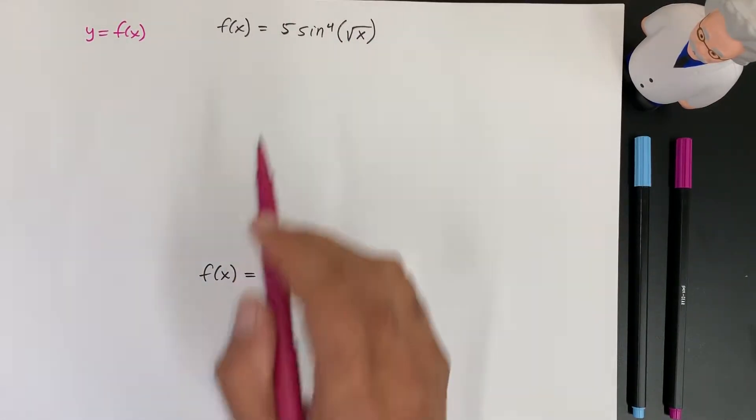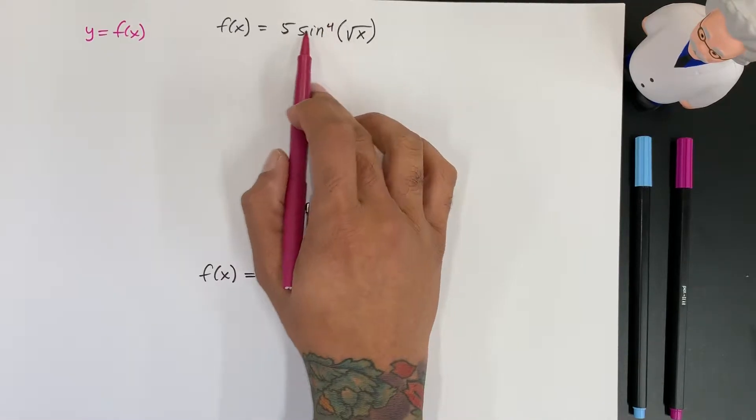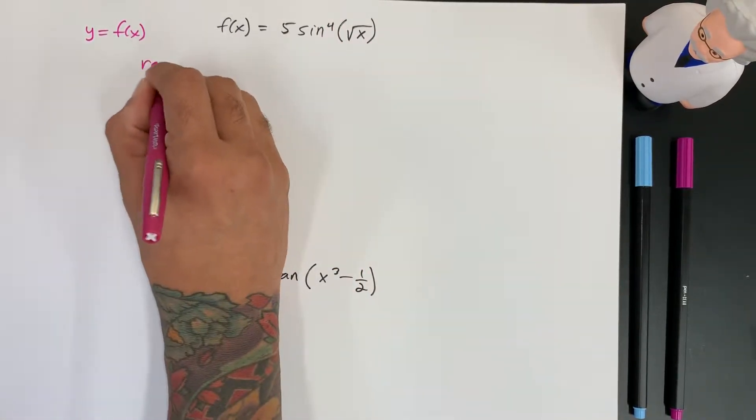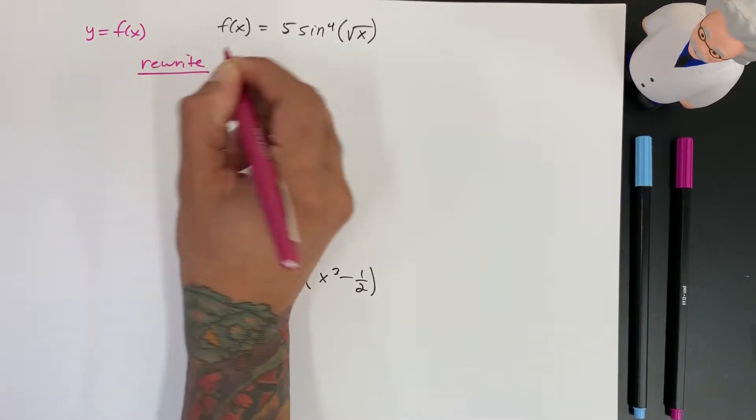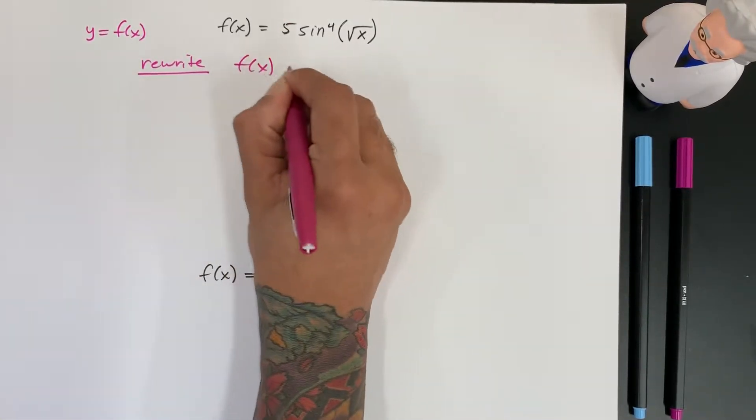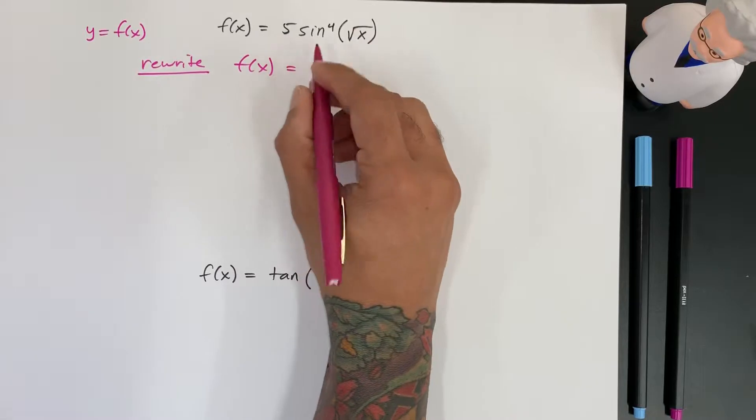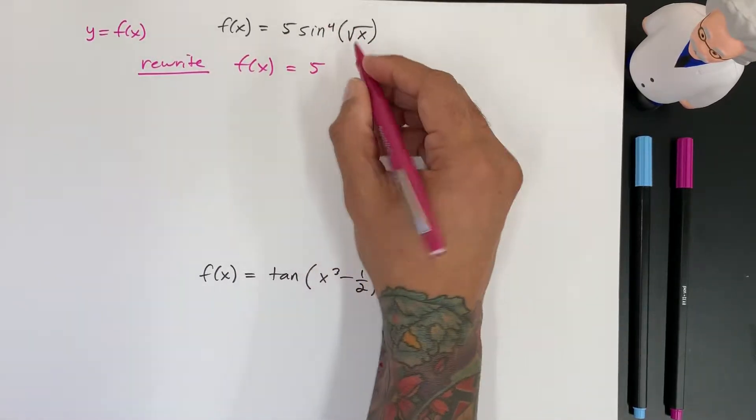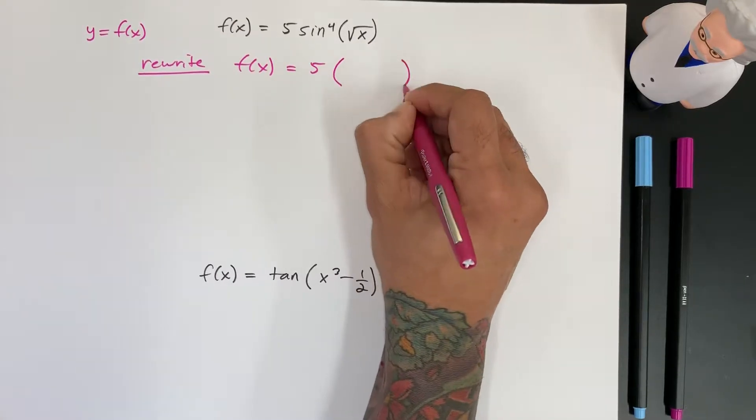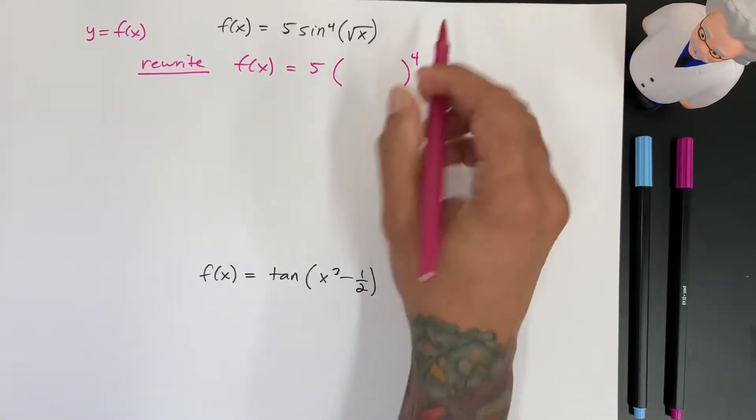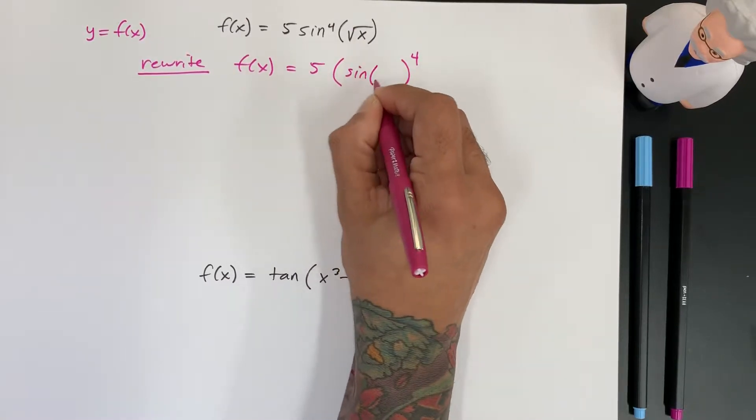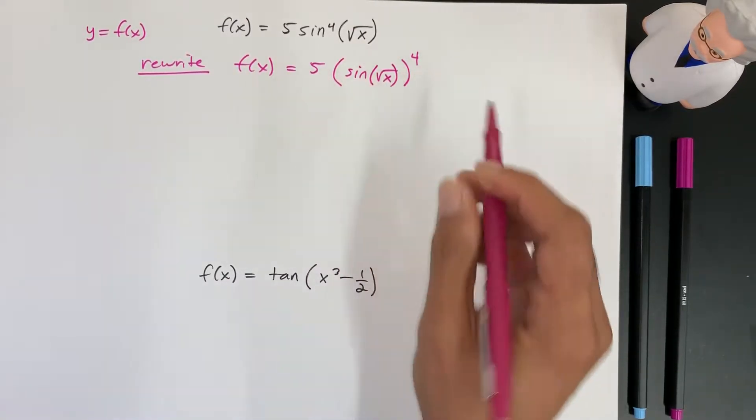So the way I start, before I do anything, when I see something that's raised to the exponent, I immediately want to rewrite it so it could be clear to me my next steps. So 5 I can write how it is, to the 4th, right? Sine to the 4th. I'm going to put a big parenthesis here and I'm going to bring that 4 all the way out. And so what I'm left with is sine of the square root of x.